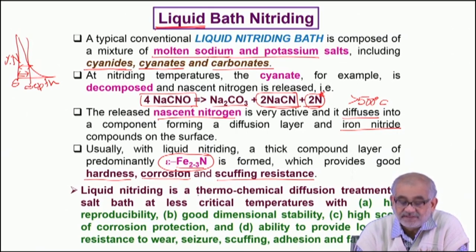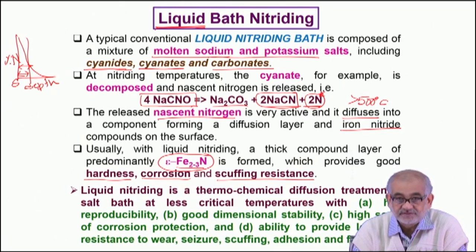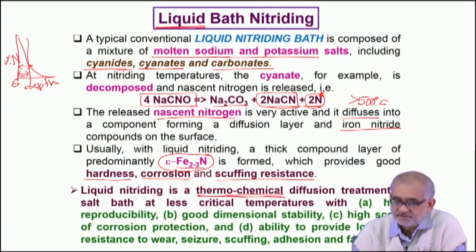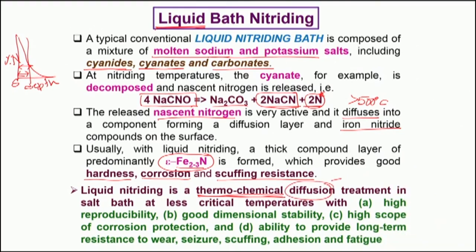As mentioned in the last few lectures, whether it is carburizing or nitriding or any of the variants, these are essentially thermochemical processes. We need both temperature and a change in composition at the surface — it is a diffusive and therefore temperature-dependent process. The difference from previous processes is that here we are dealing with a molten salt bath. Temperature is around 480 to 550 degrees centigrade, and exposure time ranges from as little as 30 minutes up to about 5 or 6 hours, depending on what thickness of nitrided layer is desired.